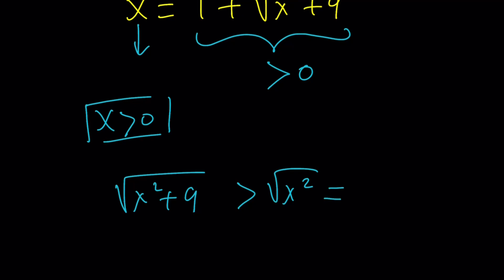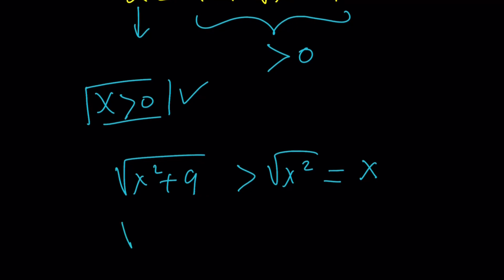So, the square root of x squared is x. It's absolute value, but x is positive, remember? So, what does this give me? The square root of x squared plus 9 is greater than x.